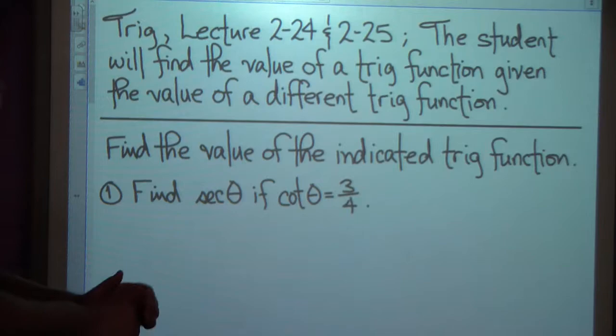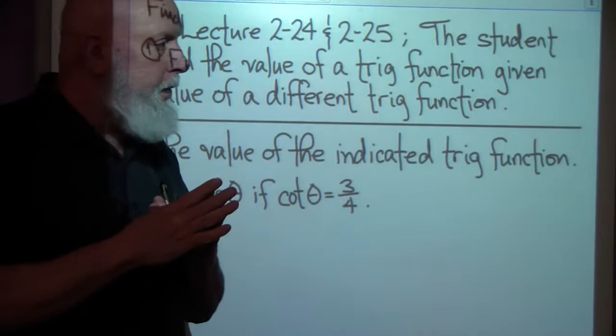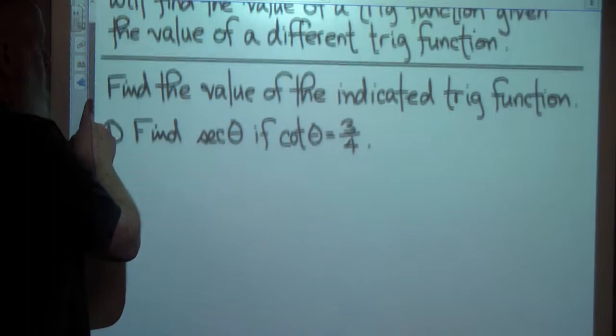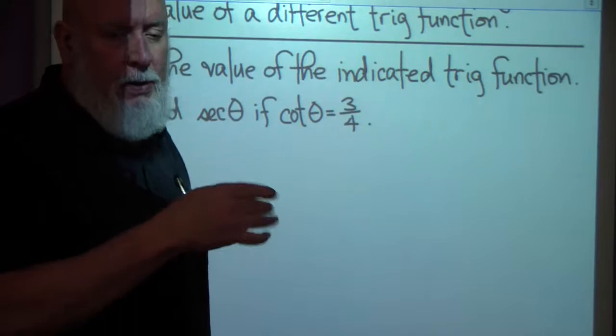Okay, trig lecture 224, 225. The student will find the value of a trig function given the value of a different trig function. We've done stuff like this in the past — it's a little walk down memory lane. We're going to be working with secant, cosecant, and cotangent instead of sine, cosine, and tangent, but it's no big deal.